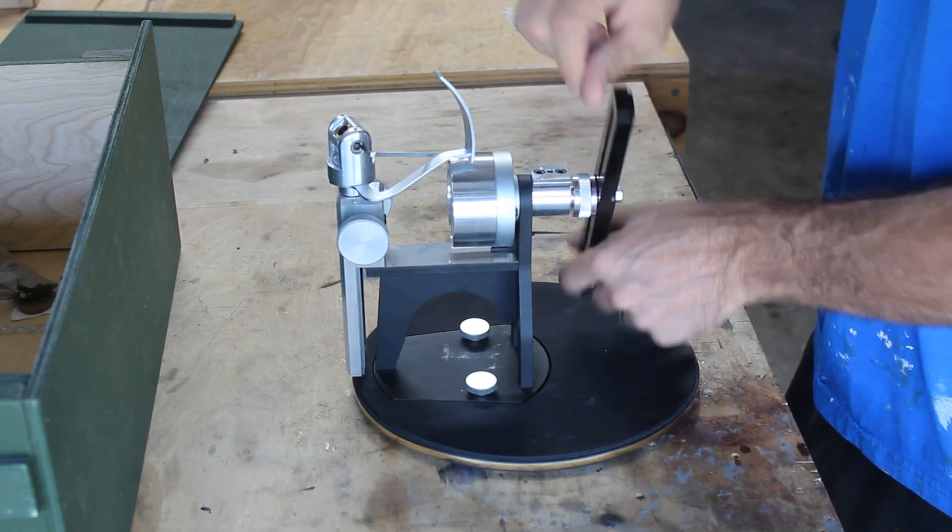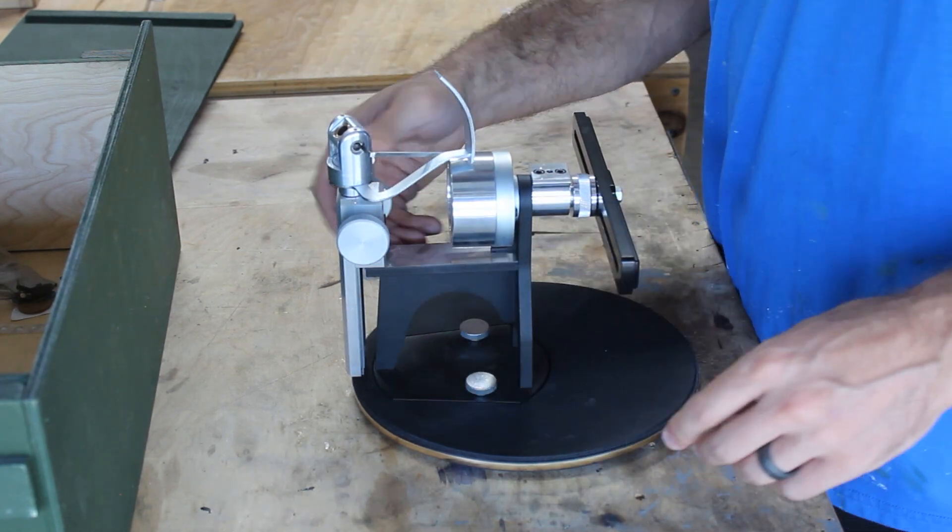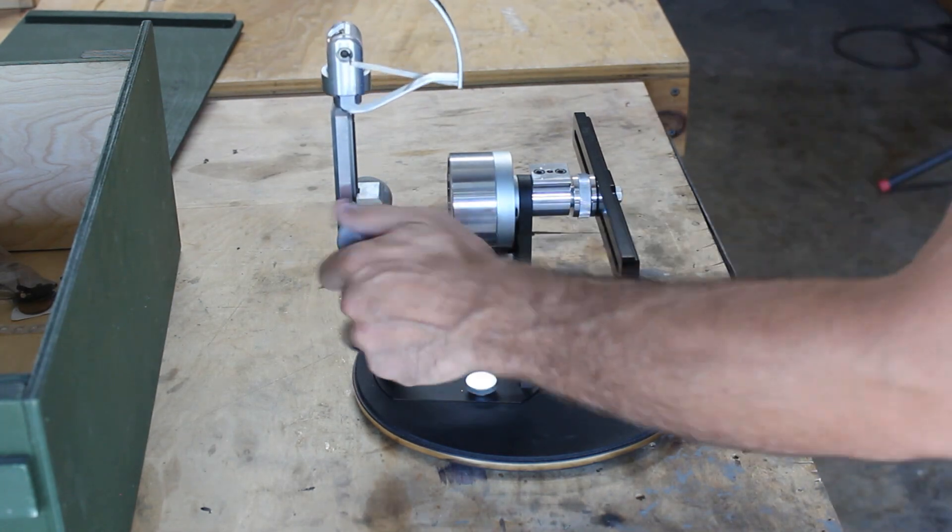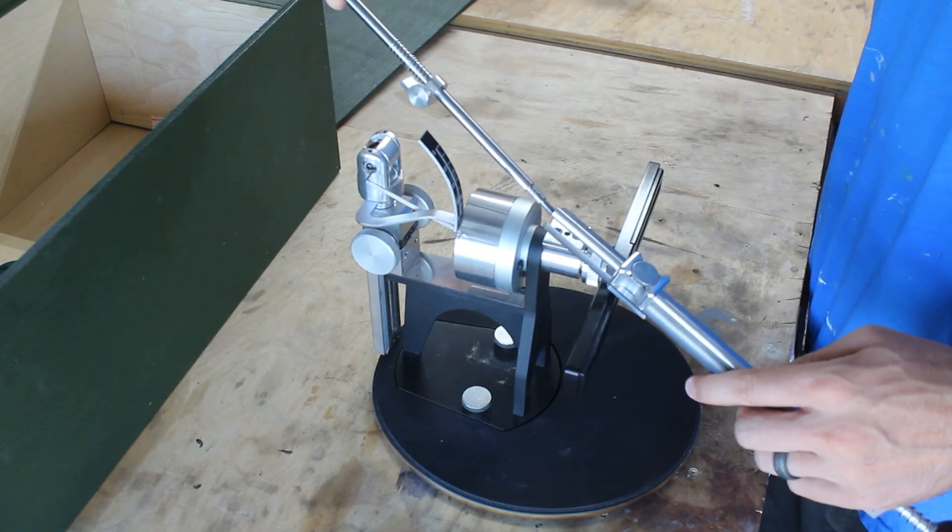And then here is how you can flip the blade back and forth very easily. And then these knobs, which are on both sides, are how you adjust the angle of sharpening up and down. They make it extremely easy to change it.